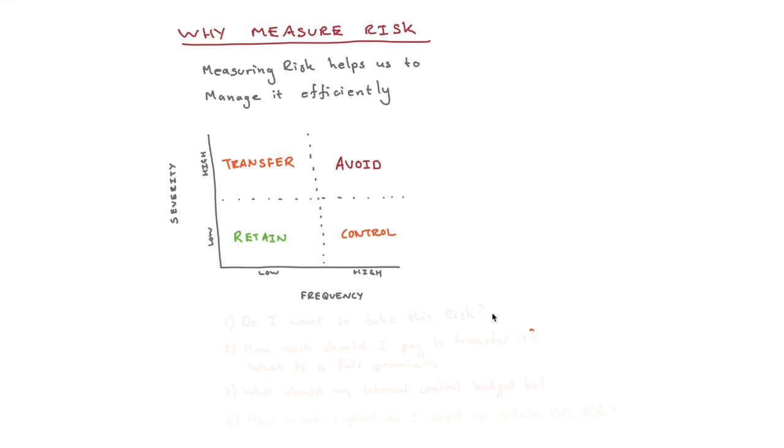But if we can accurately measure our risk, then we can start asking questions like, do I want to take this risk? Because what will actually be the cost of retaining it? And then let's say I want to transfer it. If I can measure my risk properly, I can say, well, how much should I pay to transfer it? What is a fair premium to either buy this insurance contract, or this derivative or this put call premium, there's all these various things that we can ask ourselves, if we can measure risk accurately, we know how much we should pay for it.